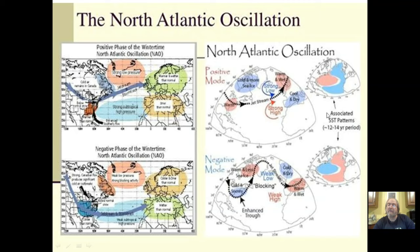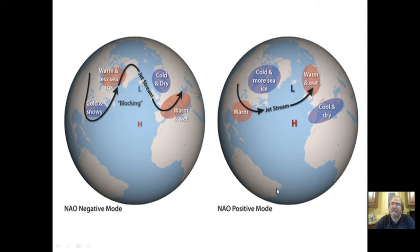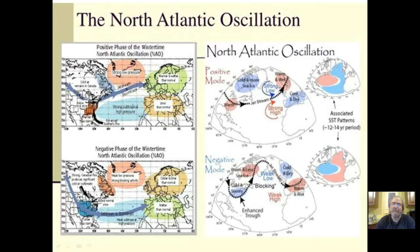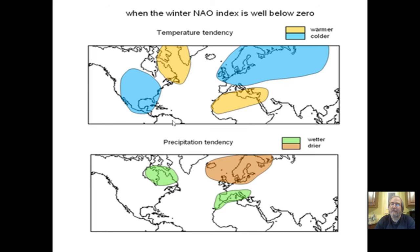This slide shows sea surface temperature. The NAO looks more at air pressure, but the storm track does affect sea surface temperature somewhat. When the winter NAO index is well below zero — negative mode — the tan areas are warmer and blue areas are colder. Precipitation patterns also flip: wetter and drier regions reverse between positive and negative phases.